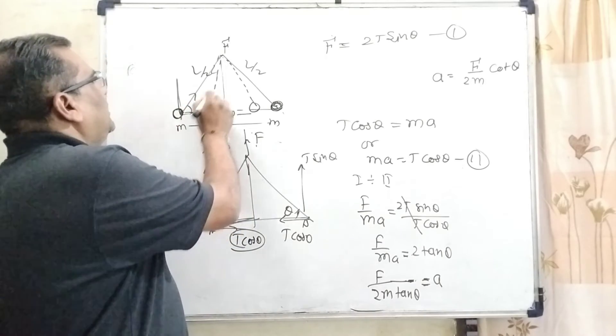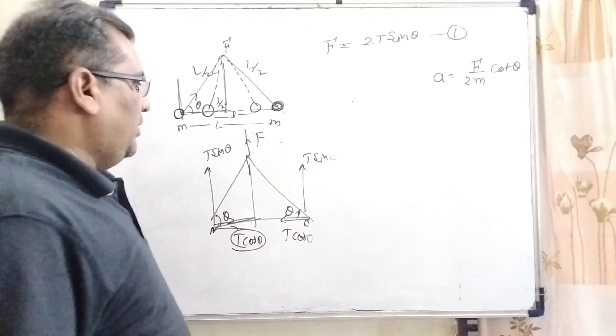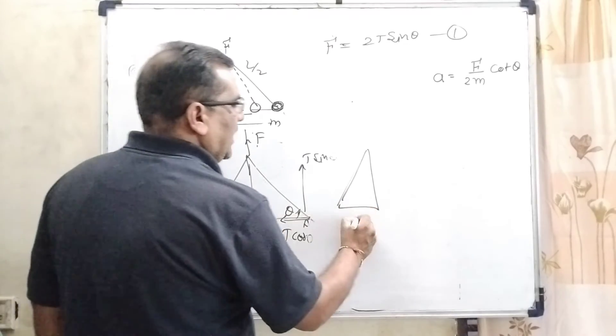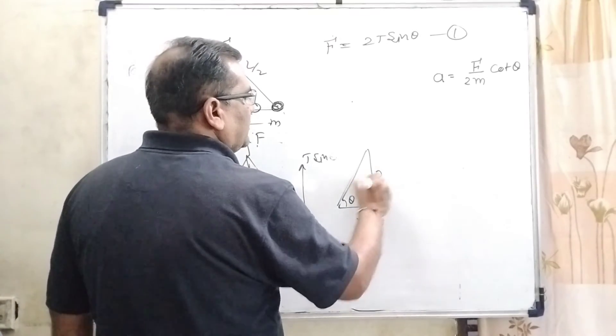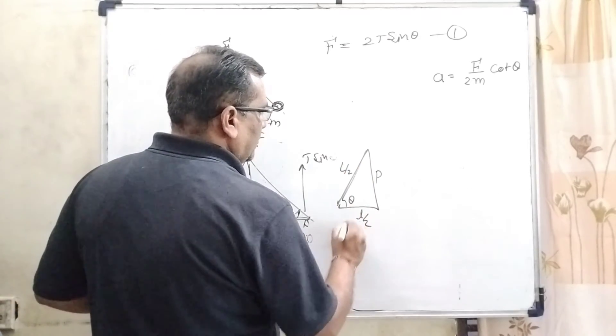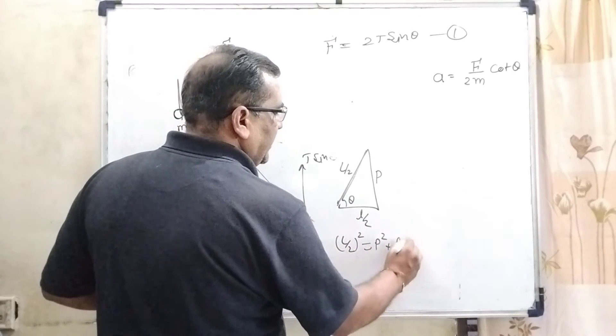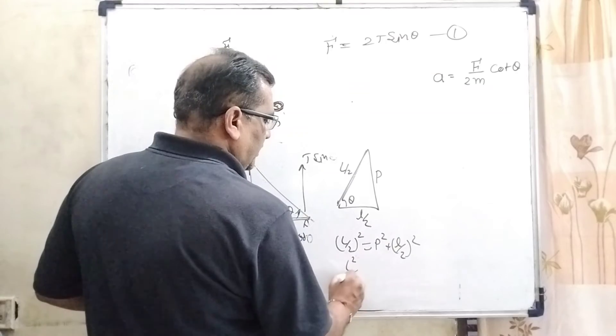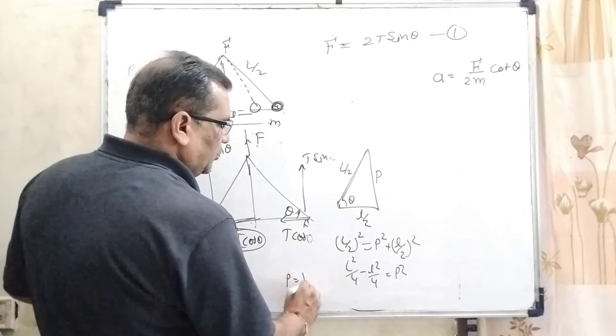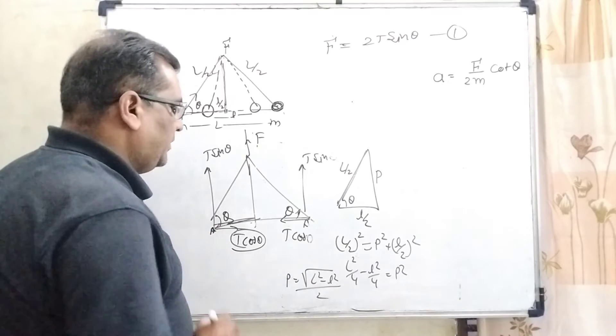And now what is cot theta? Here, the base and this is altitude. Now substitute this value. Now before substitution, we have to find out the altitude. Here, this distance is L by 2, this is theta, this is perpendicular, and this distance is L by 2, and this distance is l by 2. Then by using Pythagoras theorem, L by 2 squared equals perpendicular squared plus base squared. So L squared by 4 minus small l squared by 4 equals P squared. Then it can be written as P equals root of capital L squared minus small l squared upon 2. So this is perpendicular.